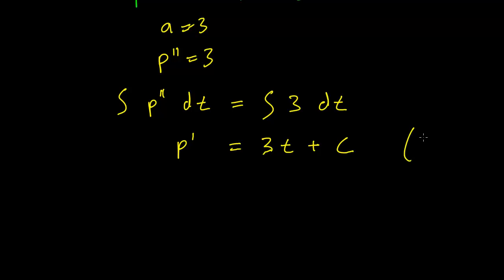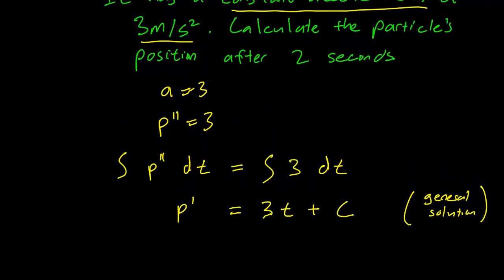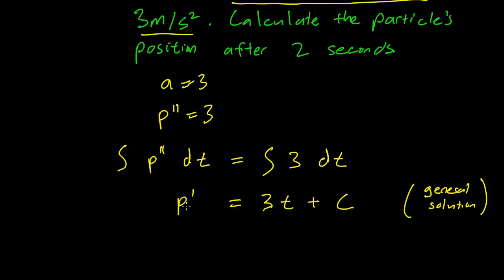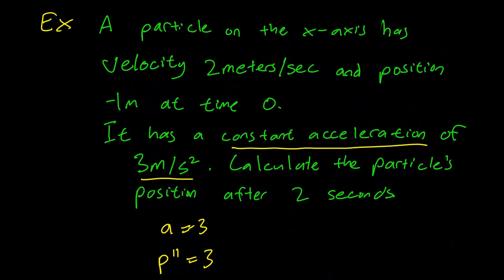This is our general solution. And we want to find a value for c. Now, this is going to be a velocity. The derivative of p is just the velocity, and we do have information about the velocity. The particle has velocity 2 meters per second and position minus 1 meter at time 0.